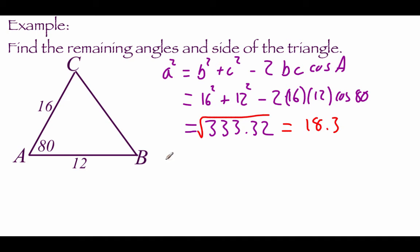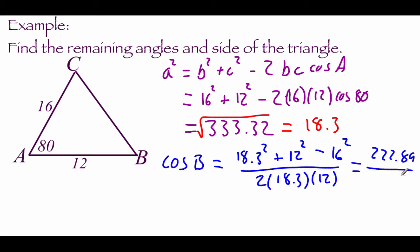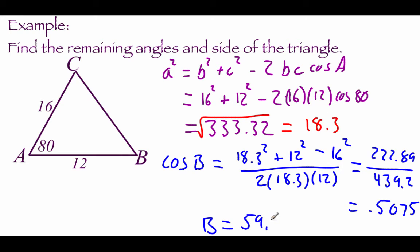Now working on the angles, let's do angle B. Cosine of B equals — using the side A we just found — 18.3 squared plus C squared (12 squared) minus B squared (16 squared), all over 2 times 18.3 times 12. Simplifying the top we end up with 222.89, and on the bottom we get 439.2. Dividing that out gives 0.5075, and the inverse cosine of that gives angle B as 59.5 degrees.